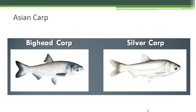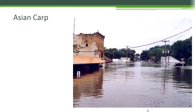Asian carp is another problematic invader in the U.S. Species like bighead carp and silver carp are causing so many problems. The Asian carp were imported into the southern United States to help keep algae in aquaculture ponds in check. Several floods came through the region, such as this flood in 1992, and the carp were able to escape. The escaped carp were able to reproduce quickly and out-compete many native fish.